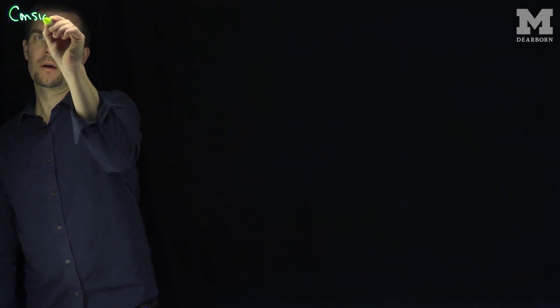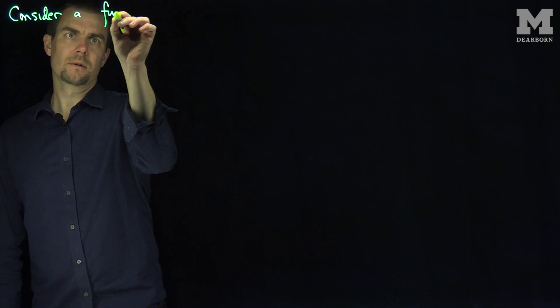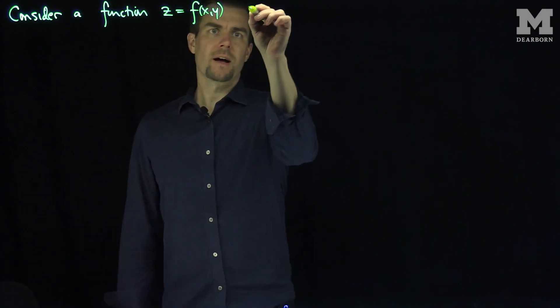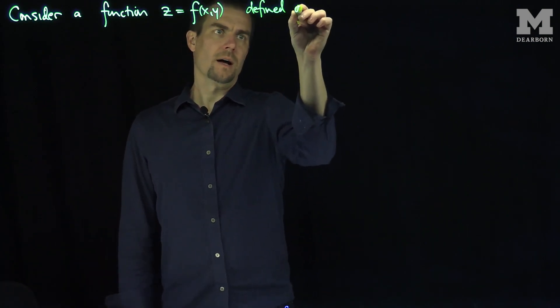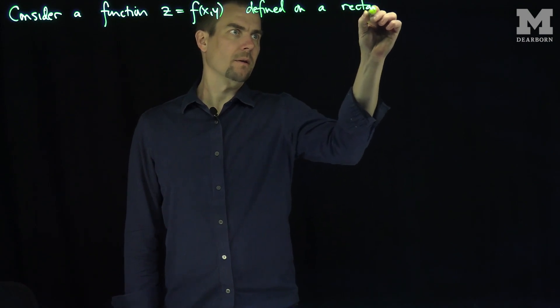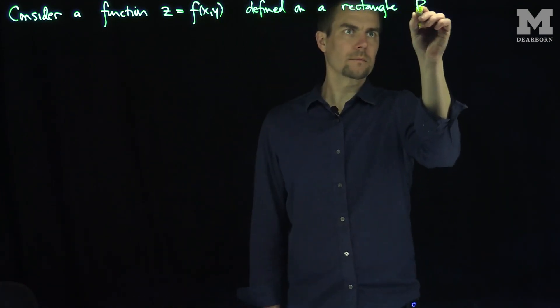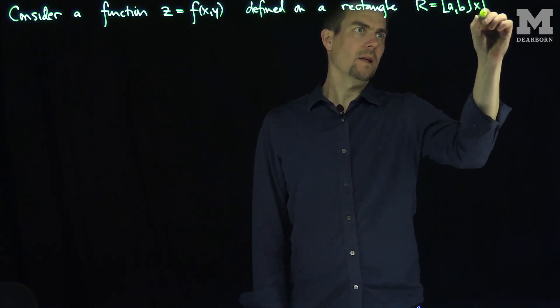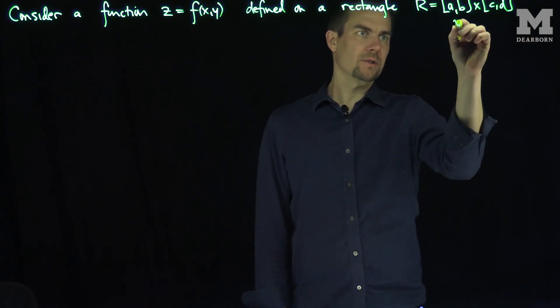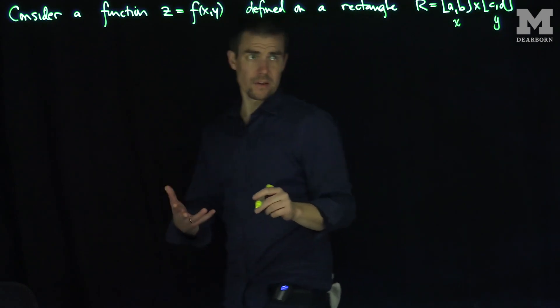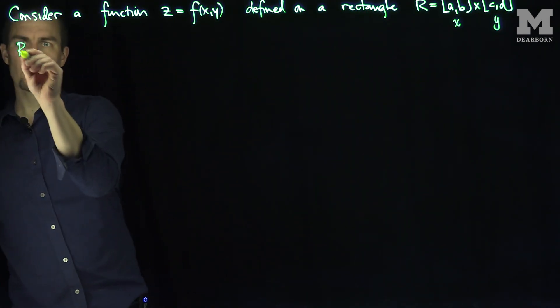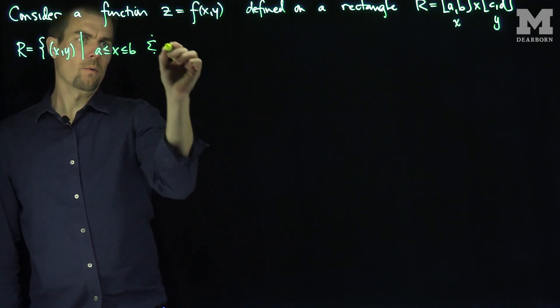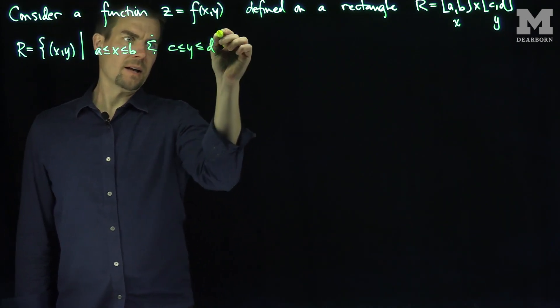Let's consider a function z equals f of x, y defined on a box or a rectangle R, and this rectangle R will be the interval where x resides between a and b, and y resides between c and d. So these are my x limits and these are my y limits. In other words, this rectangle R is the set of all points (x, y) such that x is between a and b, and y is between c and d.